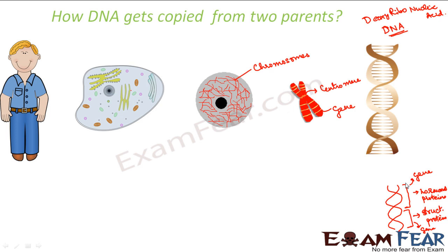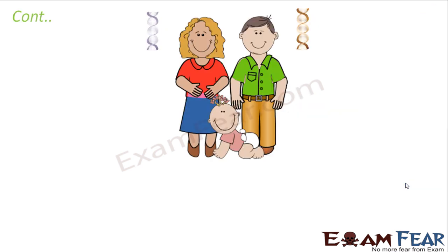That is what happens in case of reproduction. Let us suppose this is a family - this couple gives birth to a child. The father has his DNA, the mother has her DNA. Both of them will create a copy of their DNA, and these two DNA copies will combine to form the DNA of the daughter.